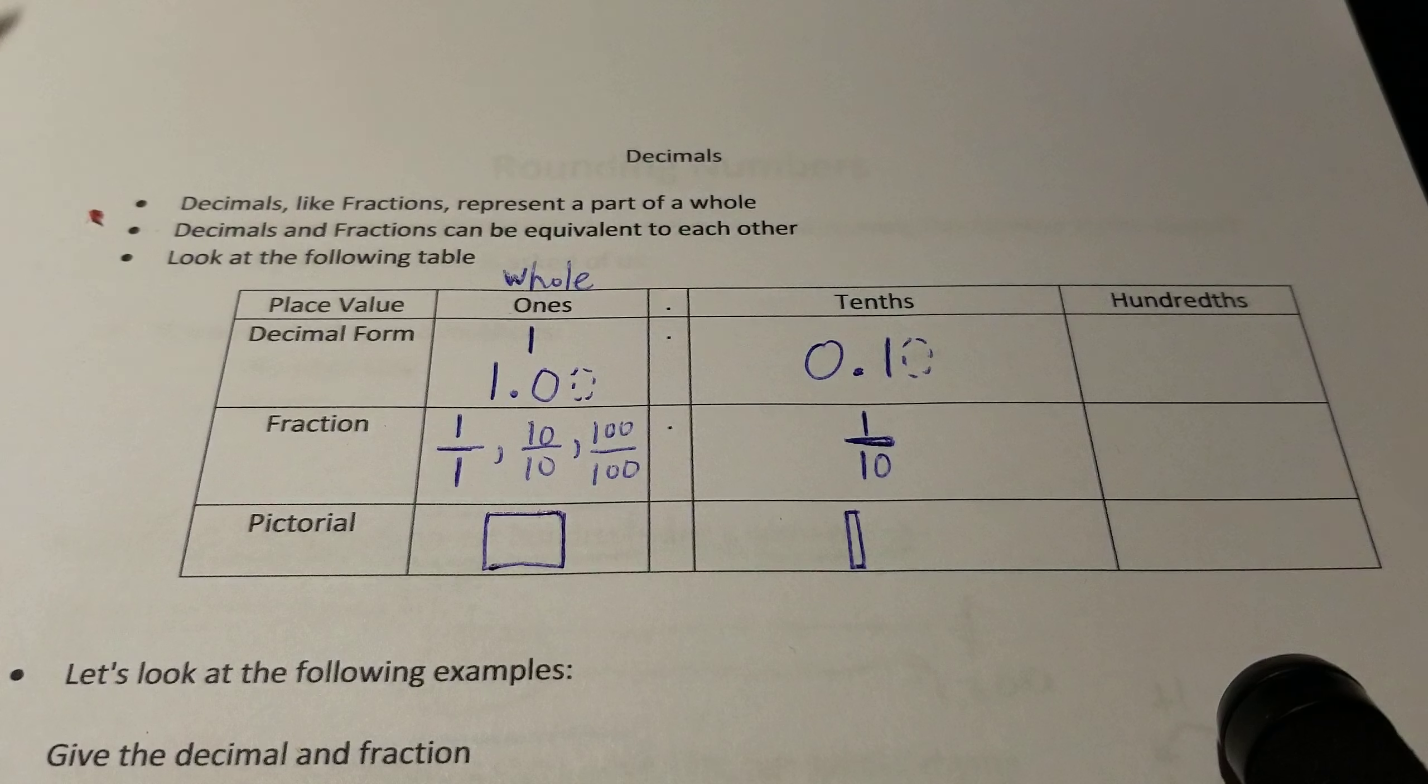So if we refer back to our knowledge of base ten blocks, I know that ten units make up a rod. So technically I have ten, twenty, thirty, forty, fifty units here. And then I have one, two, three, four, five, six, seven units here. So it looks like I have fifty-seven hundredths. Not that hard.